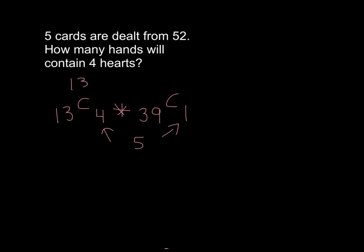So if we use 13 choose 4, then we get 715. And 39 choose one is just 39. And so the total number of ways there is 27,855 ways of choosing using a hand with five cards that contains four hearts.